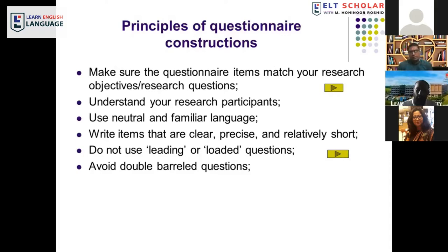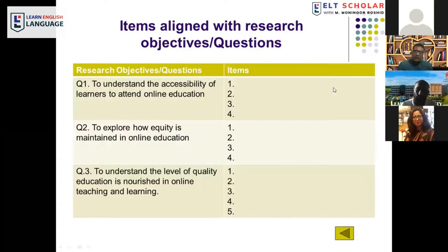Let's look at the principles of questionnaire construction. The first principle is to make sure questionnaire items match your research objectives and research questions. When you develop a questionnaire, you need to focus on research objectives or research questions. For each research question, you may develop three, four, or five items that can address the research objective. Similarly, for each objective you develop enough items — how many depends on your research objective and questions.